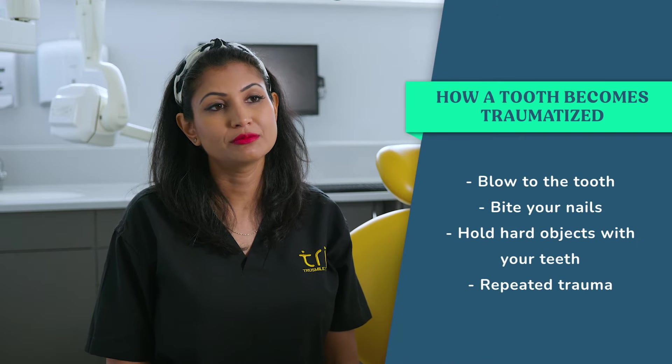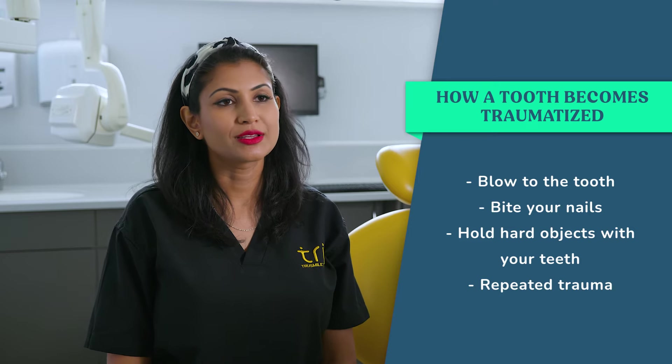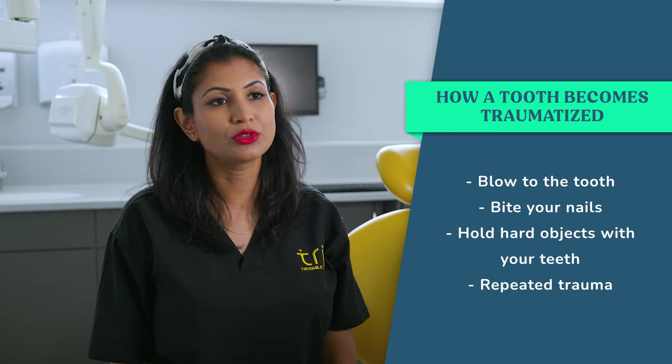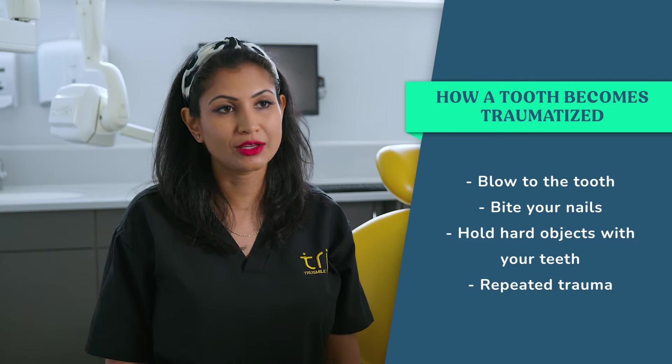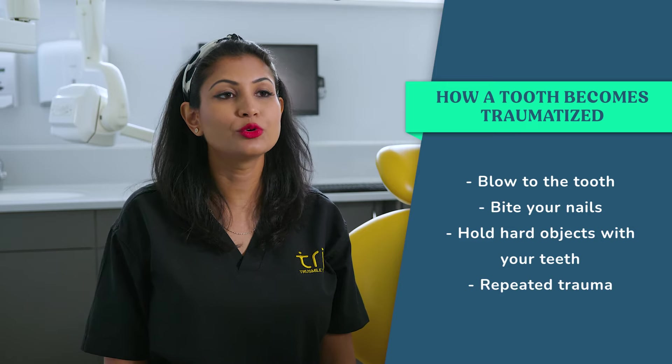The ways that you can traumatise the tooth for the nerve to become dead may be a blow to the tooth, or things such as biting your nails or holding hard things in your teeth — a repeated trauma to the tooth can cause it. Having gum disease, or the advanced form called periodontal disease, and developing a deep pocket that goes to the root of the tooth, can also cause nerve death via something called a perioendo lesion.